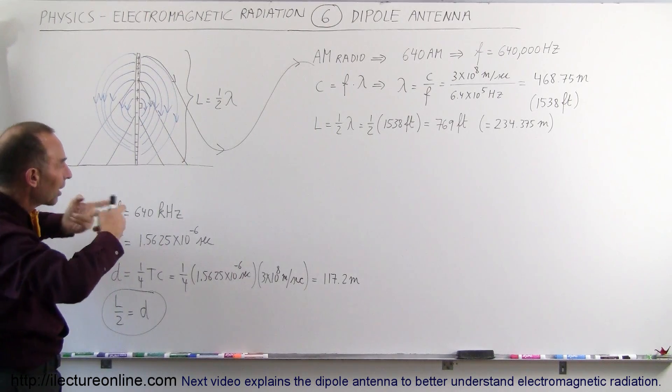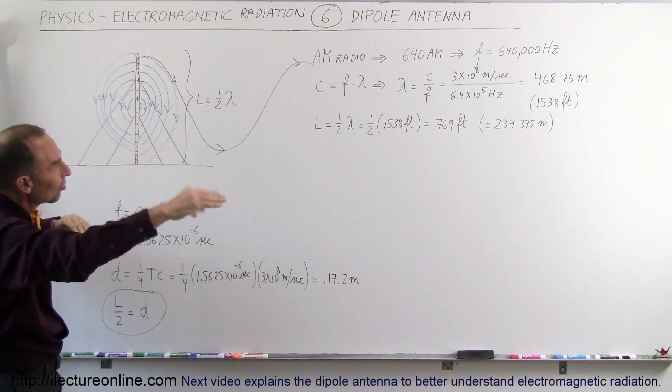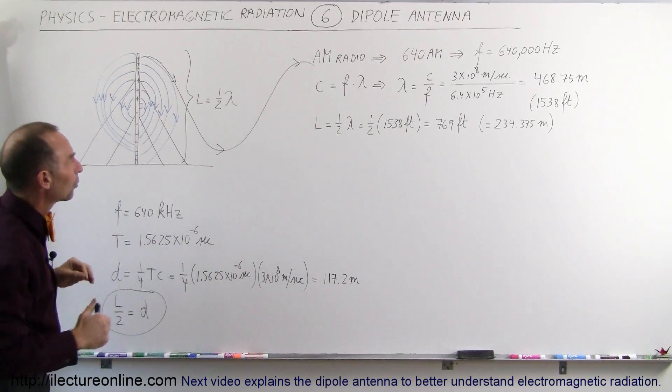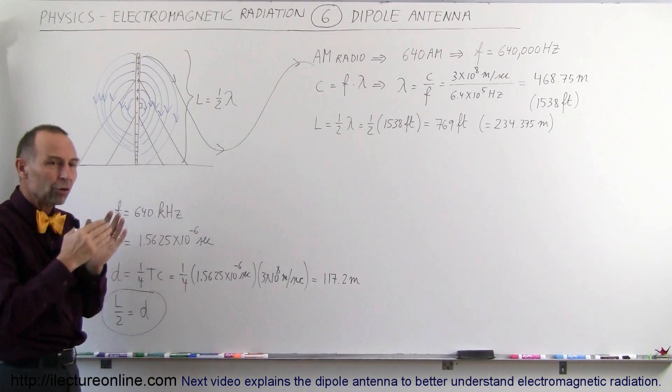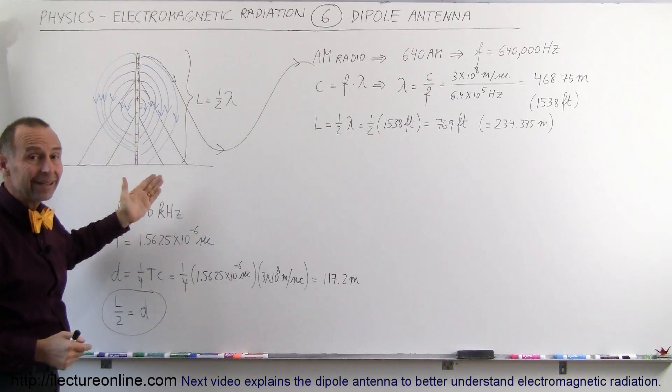But, at least, here you can see by constantly flipping over the polarity of the electric field, you'll get an oscillating signal that then goes outward. The amount of energy that goes outward depends upon the amount of energy required to send charges up and down this antenna.